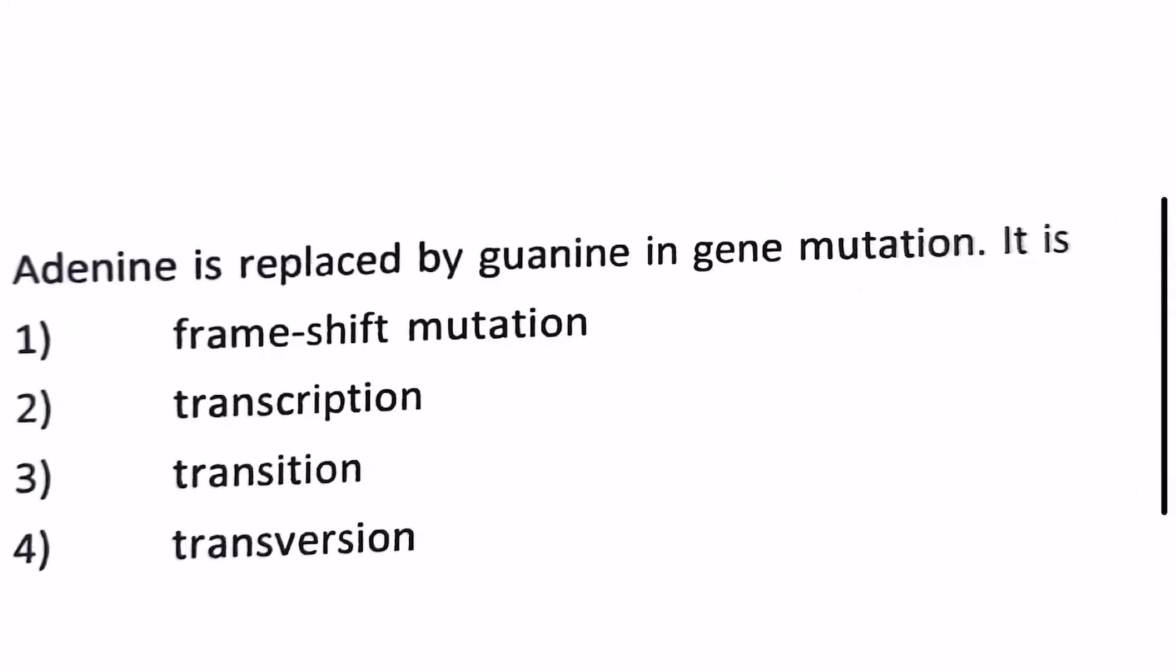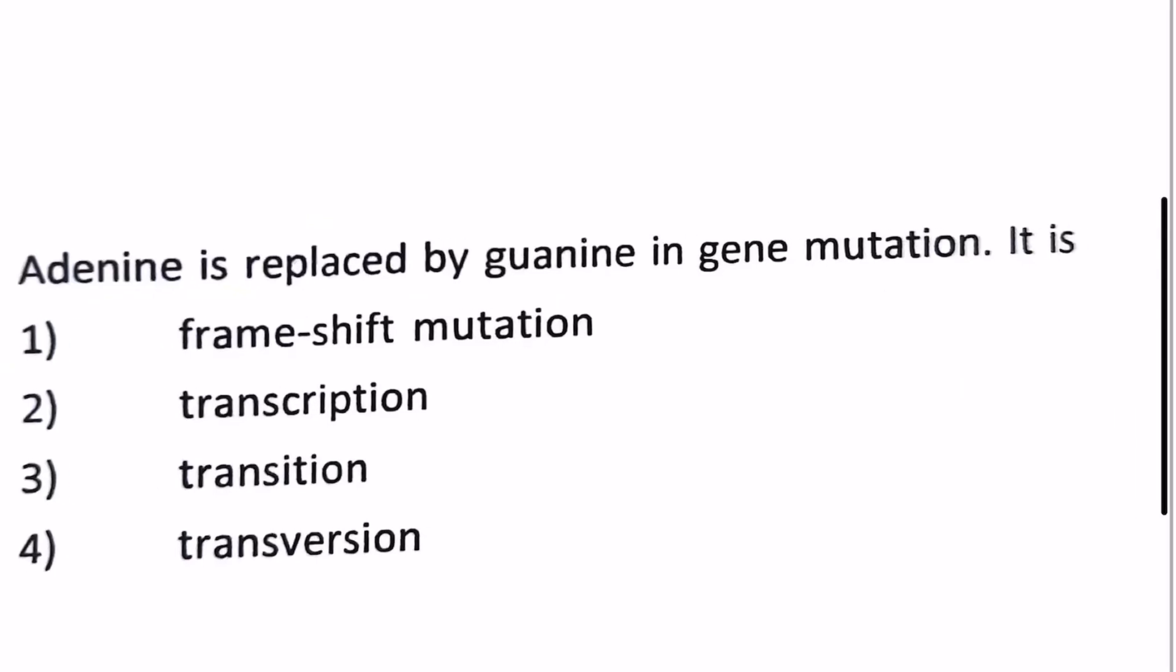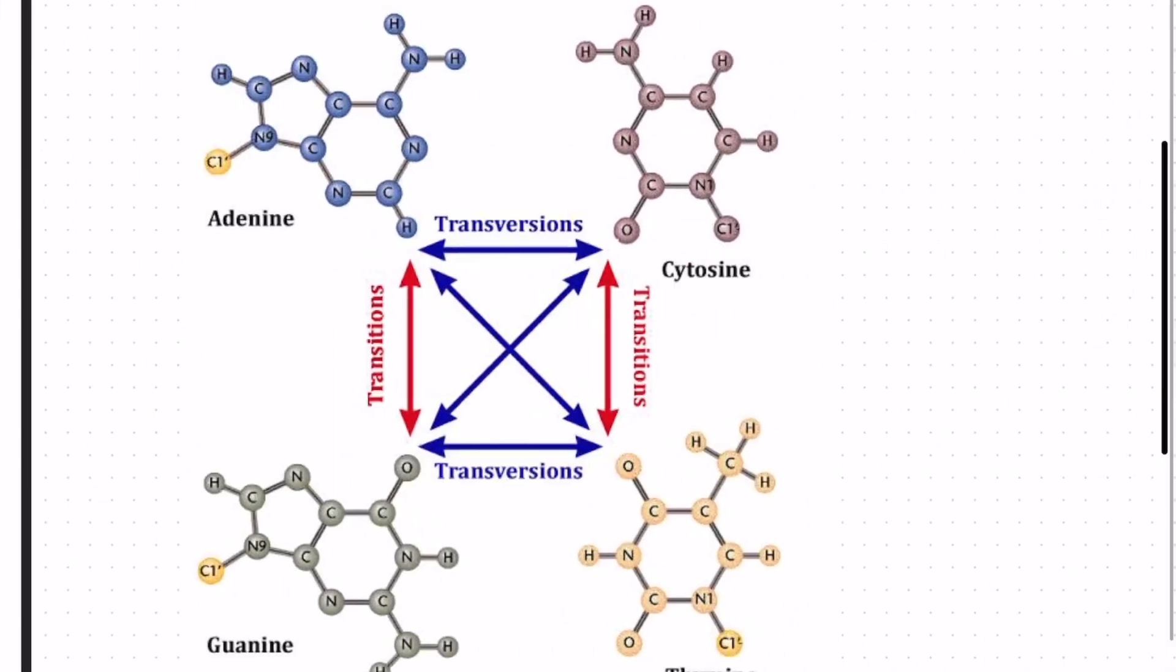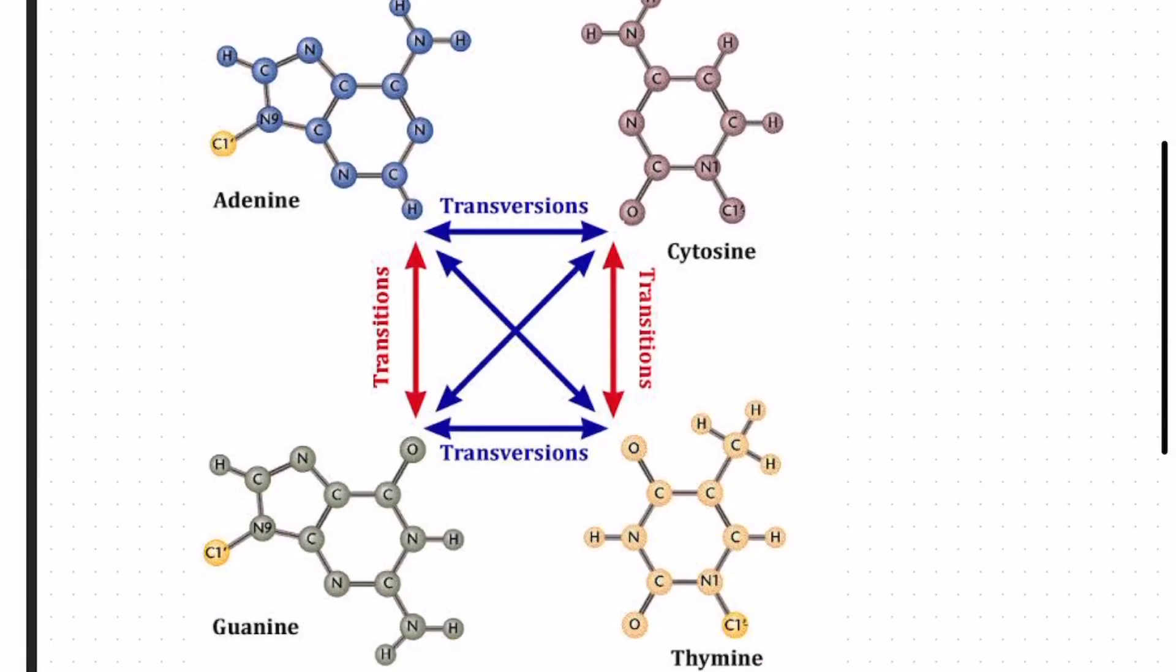Next question: adenine is replaced by guanine in gene mutation. It is which type? 1) frame shift mutation, 2) transcription mutation, 3) transition mutation, 4) transversion mutation. These are all the types of mutation. We will just give you a reference to easily explain it. When adenine gets converted to guanine it's a transition. When adenine gets converted to cytosine it's a transversion. Guanine to thymine are transversions, whereas adenine to guanine, cytosine to thymine are transitions. Therefore our answer will be transition.